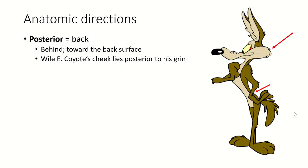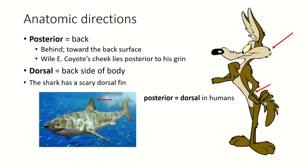The posterior direction, posterior is to the back. So on Wile E. Coyote, his cheeks actually extend to the posterior. His posterior is on the posterior, because some people call your butt posterior. Anyway, dorsal is the backside of the body. And in humans, posterior is dorsal. Again, not the same in animals.